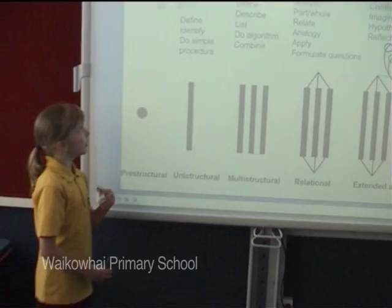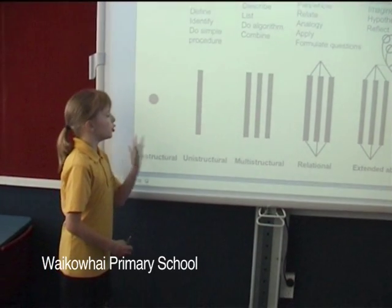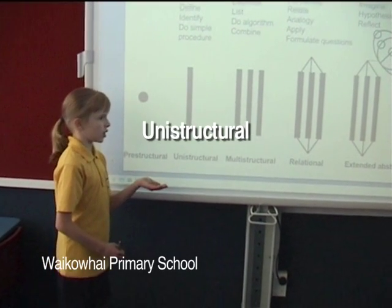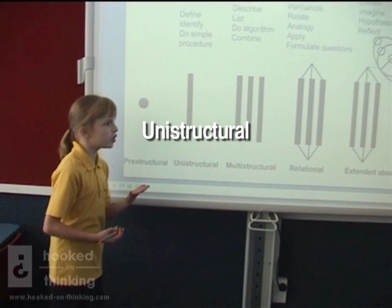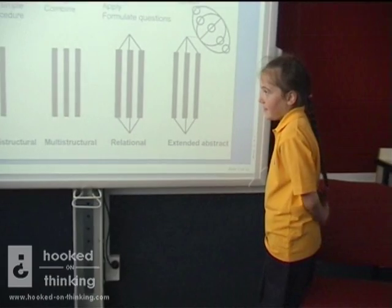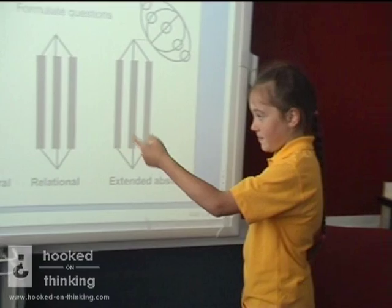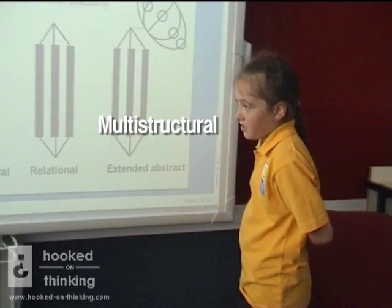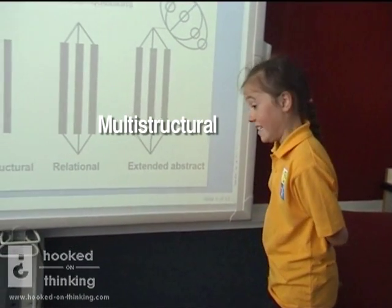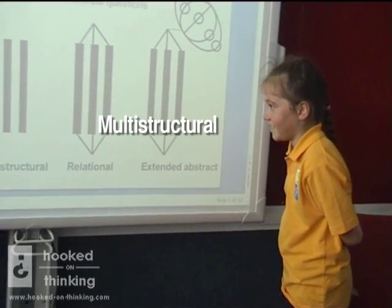Unistructural is knowing nothing about something — we all sort of start off at the beginning. When we know unistructural, that's asking a question and getting a yes or no answer. It's a good first step, but you need to be asking multistructural, which has more than one answer.